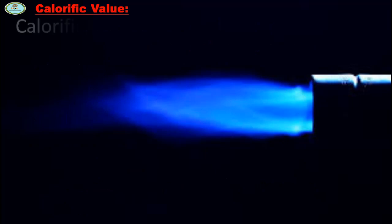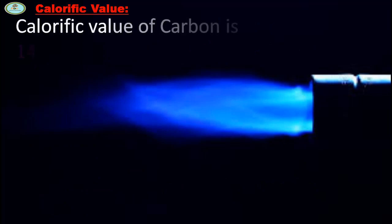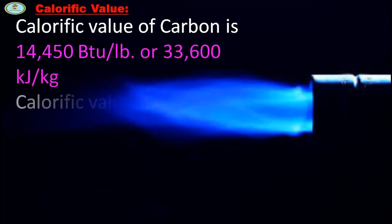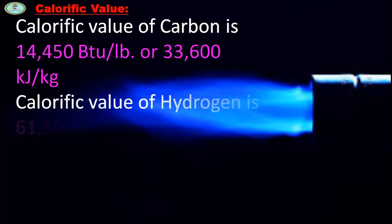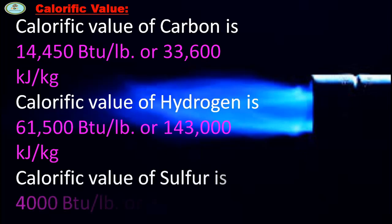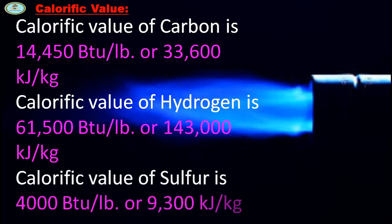Calorific value of carbon is 14,500 BTU per lb or 33,600 kJ per kg. Calorific value of hydrogen is 61,500 BTU per lb or 143,000 kJ per kg. Calorific value of sulphur is 4,000 BTU per lb or 9,300 kJ per kg.